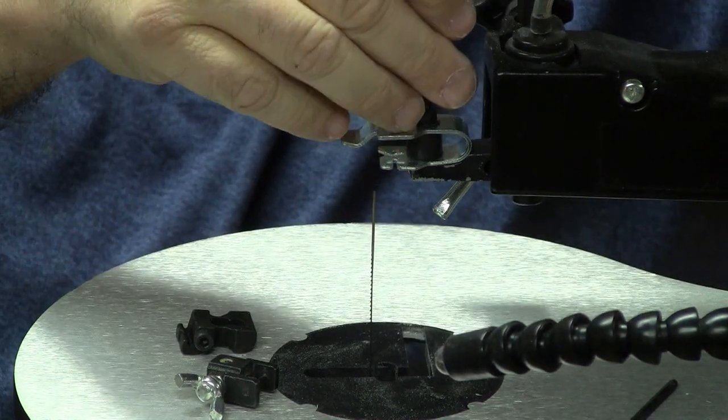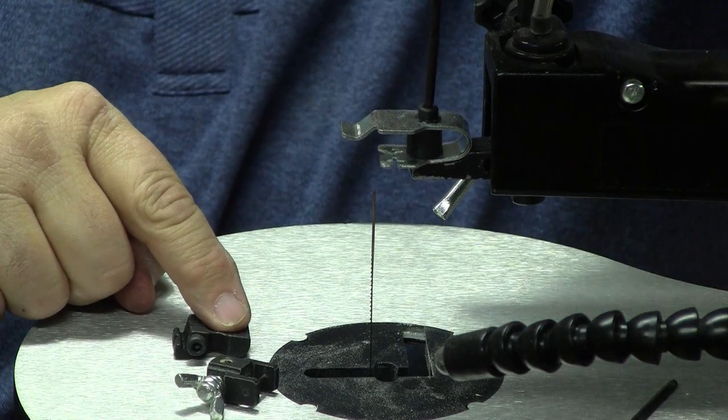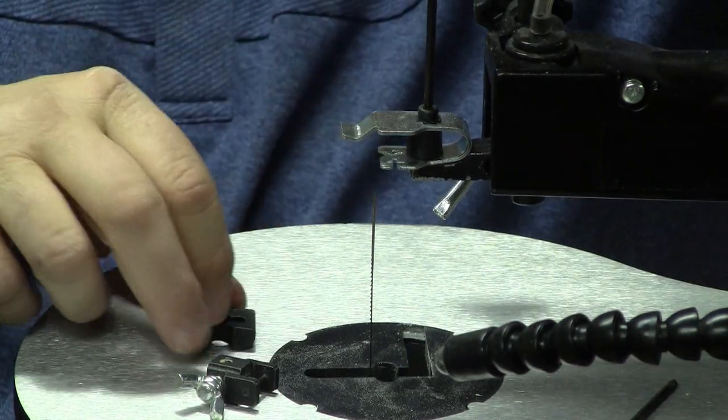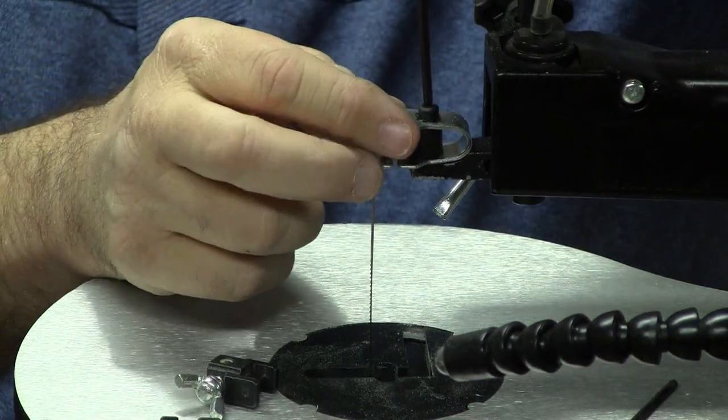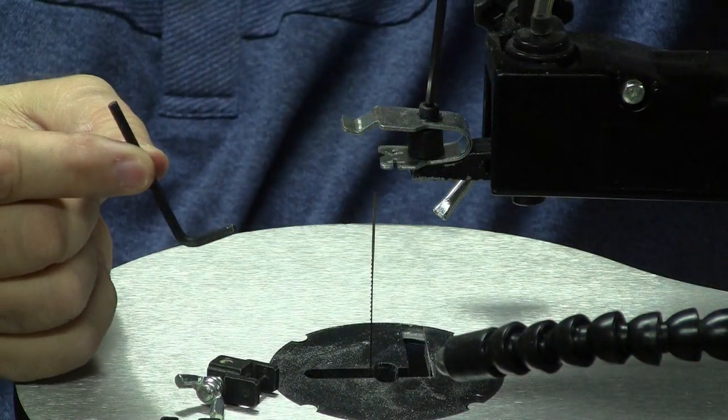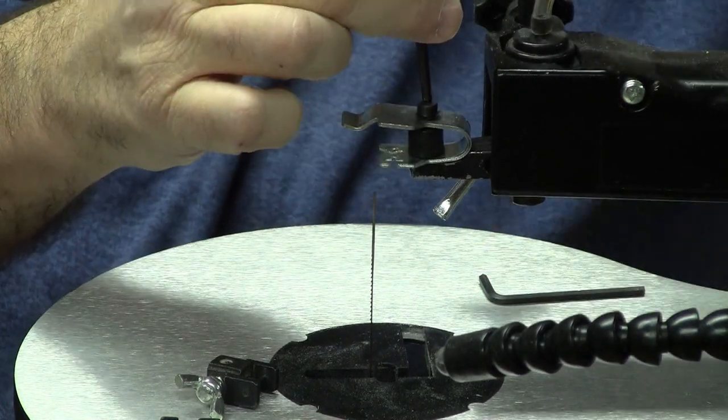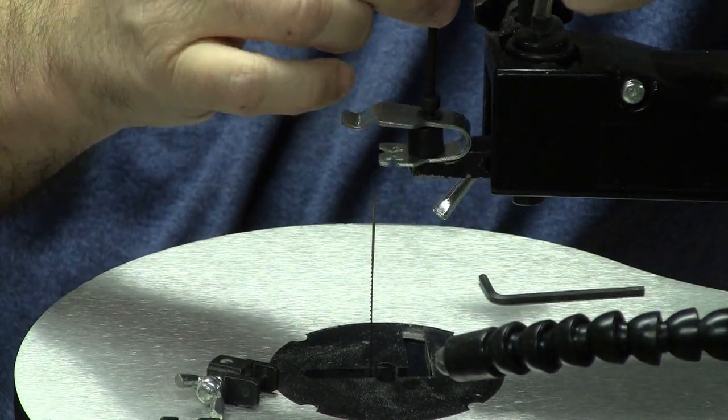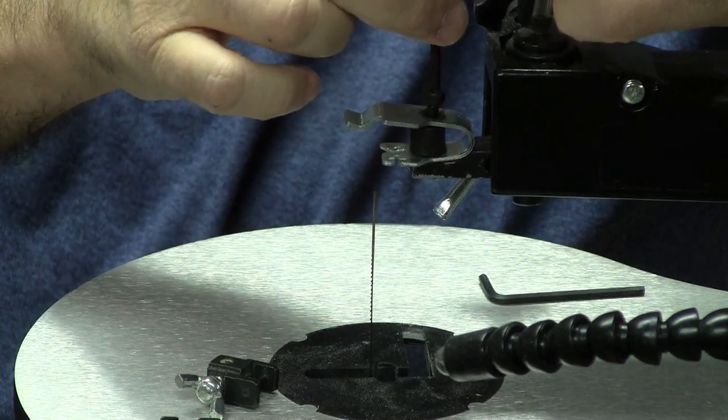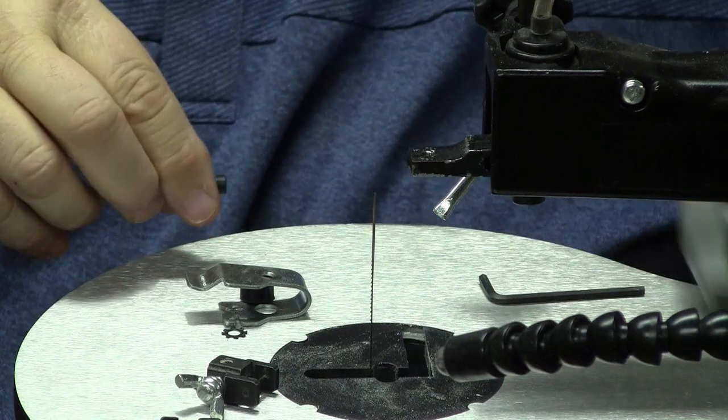You will need a 3mm Allen wrench. I've already got the clamp on the bottom one, and I didn't want to do that on camera because it's harder to get to. You'll need a short 3mm Allen wrench for the bottom one. There's not a whole lot of room, so make sure you take the left side panel off before you replace it. But it's really simple, you just remove this one screw and take the upper arm off.